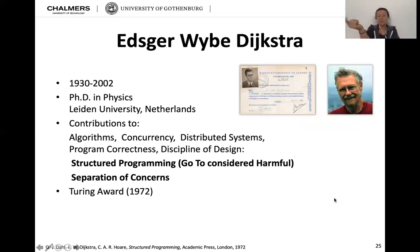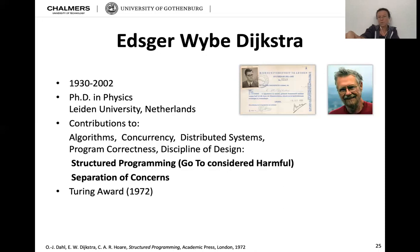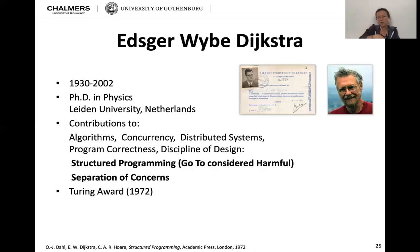Dijkstra lived between 1930 and 2002. He came from the Netherlands and contributed a lot to algorithms, concurrency, distributed systems, program correctness, and discipline of design. He came up with two specific things that get cited a lot. First is structured programming, also known as 'go-to considered harmful' — that was the paper he wrote under that title. In procedural programming languages, you could just say 'go to line 27' and it would continue from there. The go-to problem was it would do that in any case, and in a lot of cases that would lead to problems.